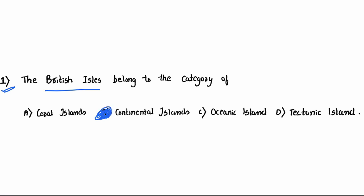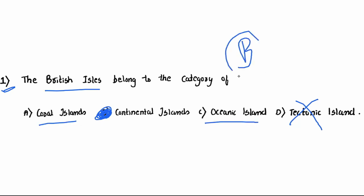There is nothing called Tectonic Islands. We'll see the other two, and there is one more kind of island called a Barrier Island. We'll see all four types.